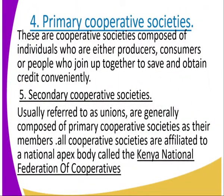The fourth type is Primary Cooperative Societies. These are cooperative societies composed of individuals who are either producers, consumers, or people who join together to save and obtain credit. Secondary cooperatives, usually referred to as unions, are generally composed of primary cooperative societies as their members. All cooperative societies are affiliated to a national apex body called the Kenya National Federation of Cooperatives.